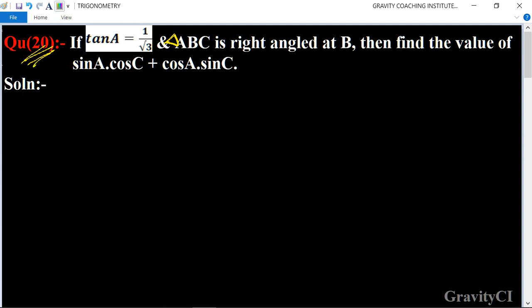Chapter trigonometry question number 20: If tan A is equal to 1 upon root 3 and triangle ABC is right-angled at B, then find the value of sin A into cos C plus cos A into sin C.